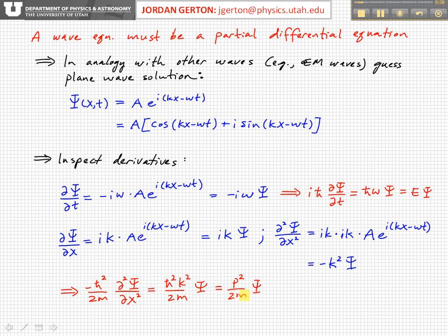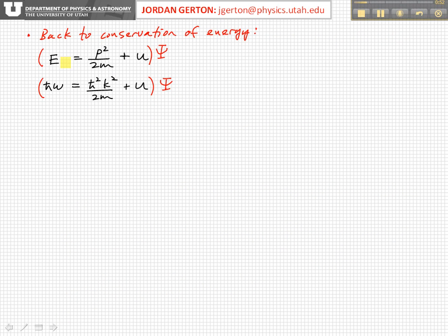And so now we're getting somewhere because now we actually have two pieces of the conservation of energy. So let's look at conservation of energy again. So we have E is equal to p squared over 2m plus u. And remember, if we're using the de Broglie relationships, that's equal to h bar omega is equal to h bar squared k squared over 2m plus u. Remember, u is the potential energy.